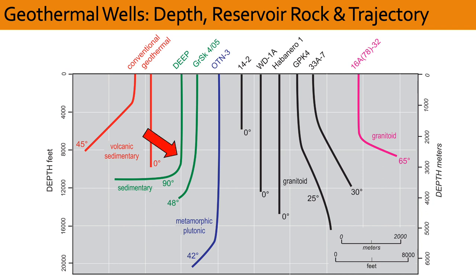Next in green, two well profiles drilled in sedimentary basins are shown. The one labeled deep is recently completed in southern Saskatchewan in the Williston basin, and it has a 90 degree deviated leg. The other well is at Grossschönebeck in Germany, and it has a bottom hole temperature of 160 degrees Celsius.